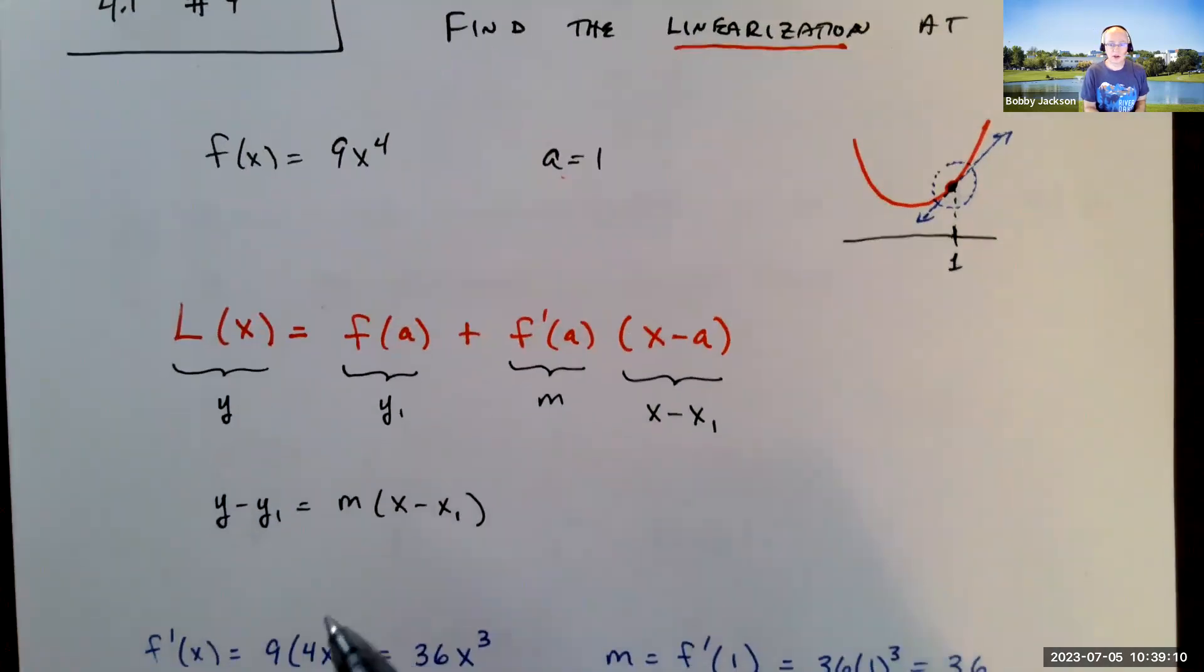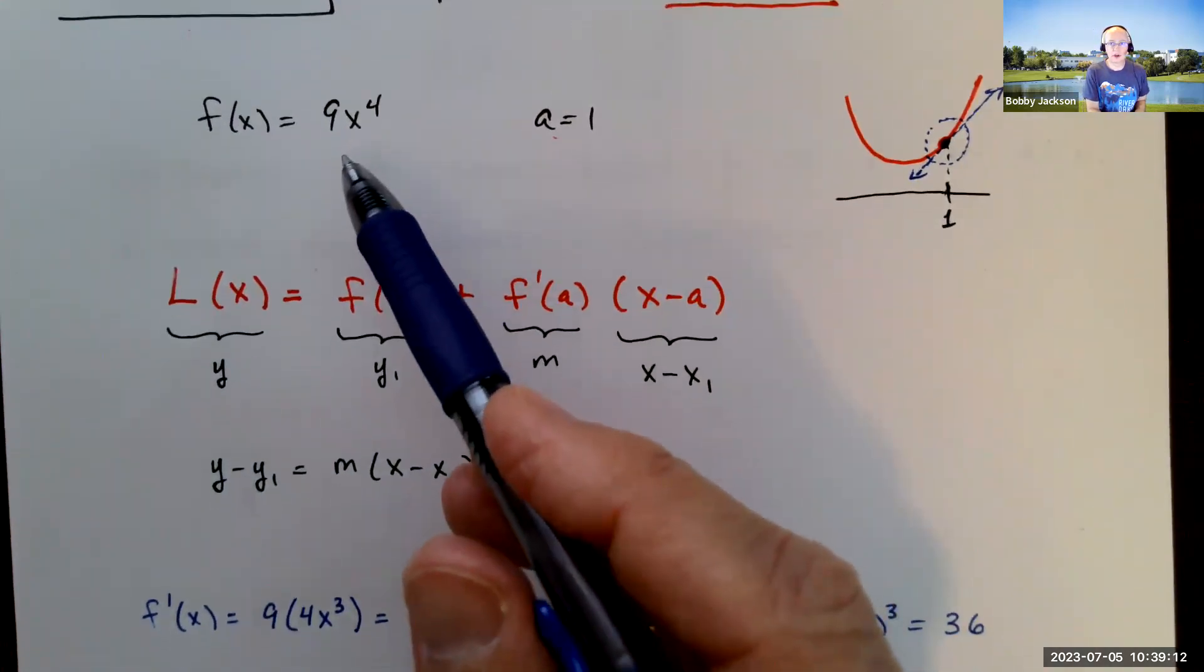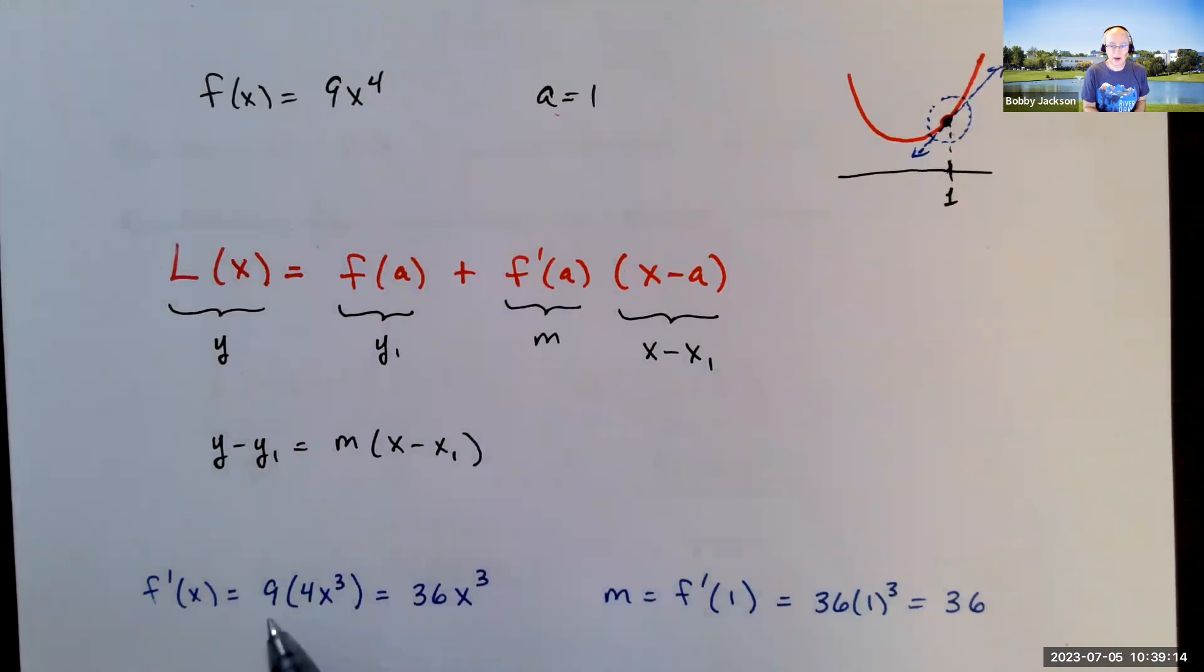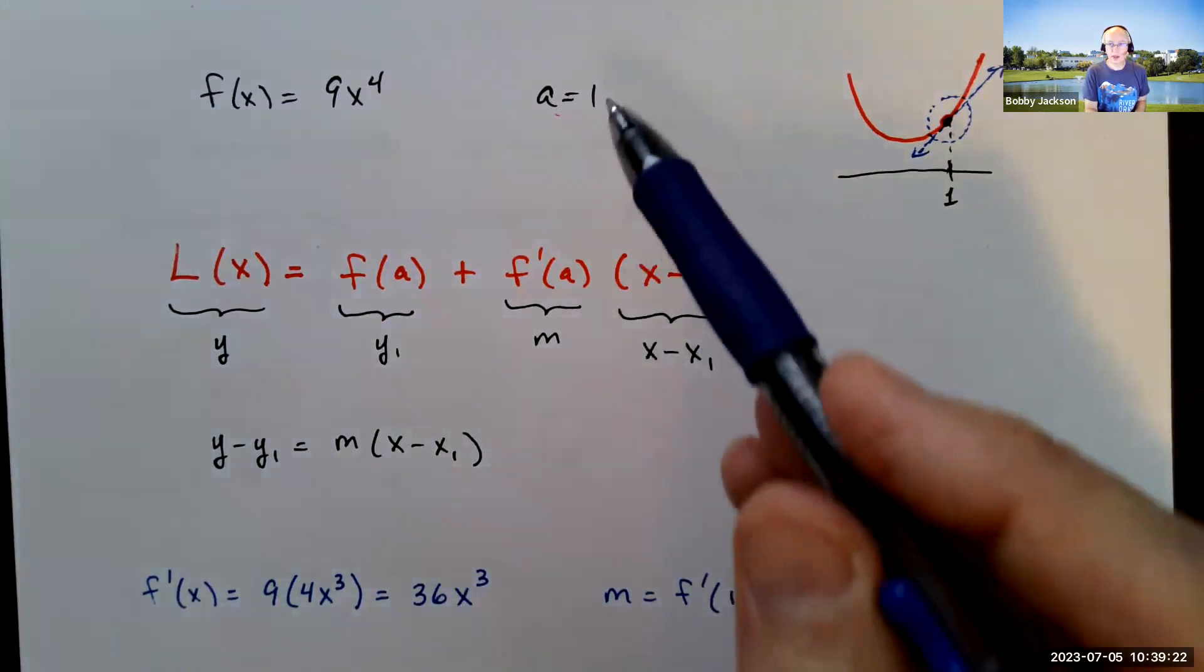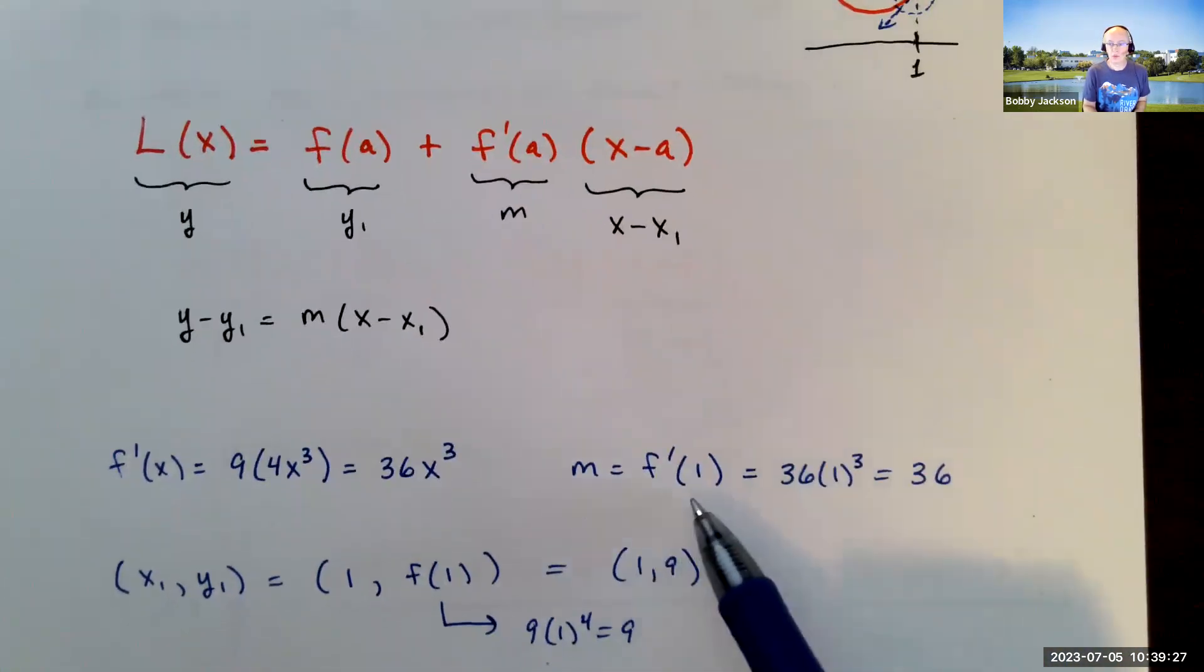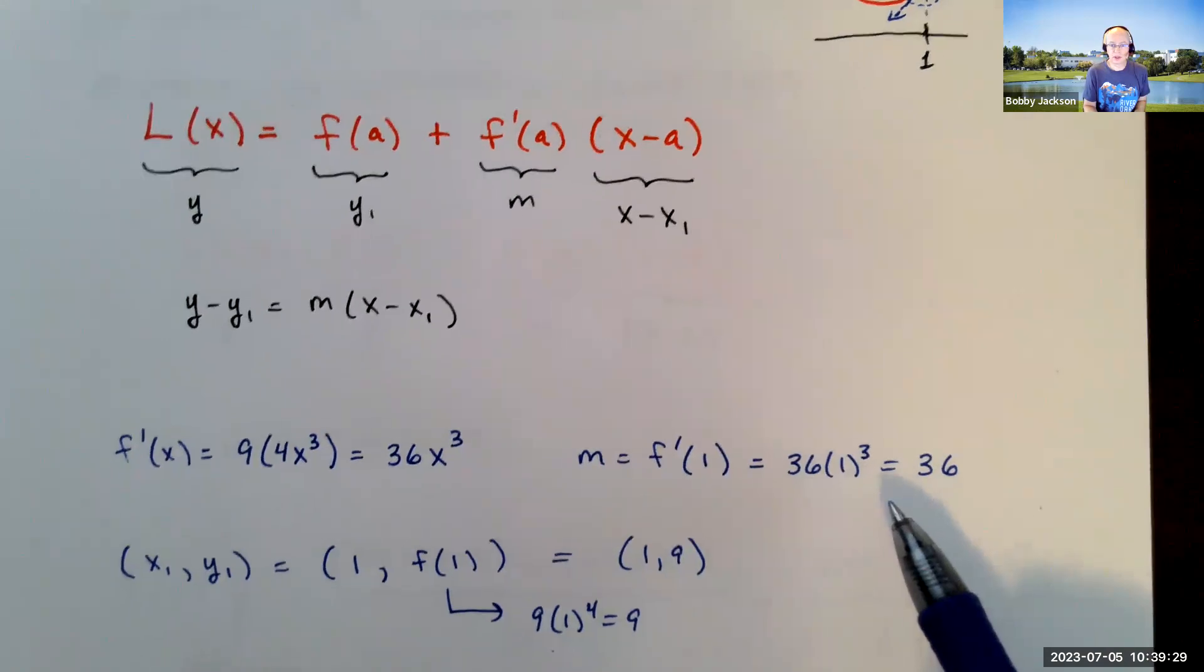So first thing we need to do is find the slope. How do we do that? We take the derivative of this function. Well, that's a piece of cake. By the power rule, we have x to the fourth is 4x cubed times that 9. 36x cubed is our derivative. So our slope, we're looking at the value at x equal 1. And so I plug in 1 into that, and I get 36 for my slope.